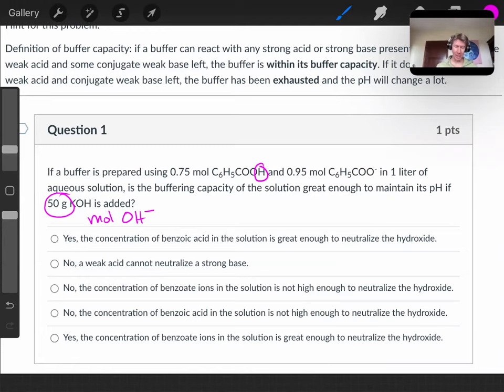Then, however many moles that is, you're going to compare it to your moles of weak acid to see which is greater. If your moles of weak acid is greater, then you do have a good buffer and the answer will be yes. And if you have more moles of hydroxide, you'll choose one of the no options that says the concentration of benzoic acid is not high enough to neutralize the hydroxide.